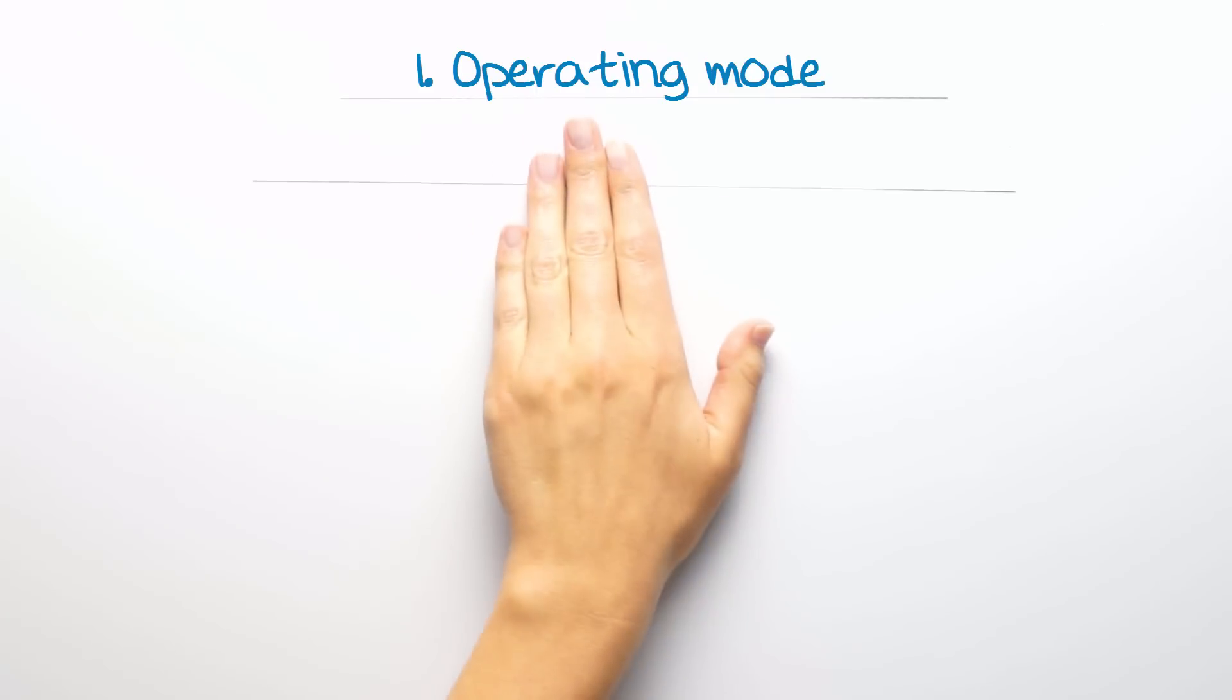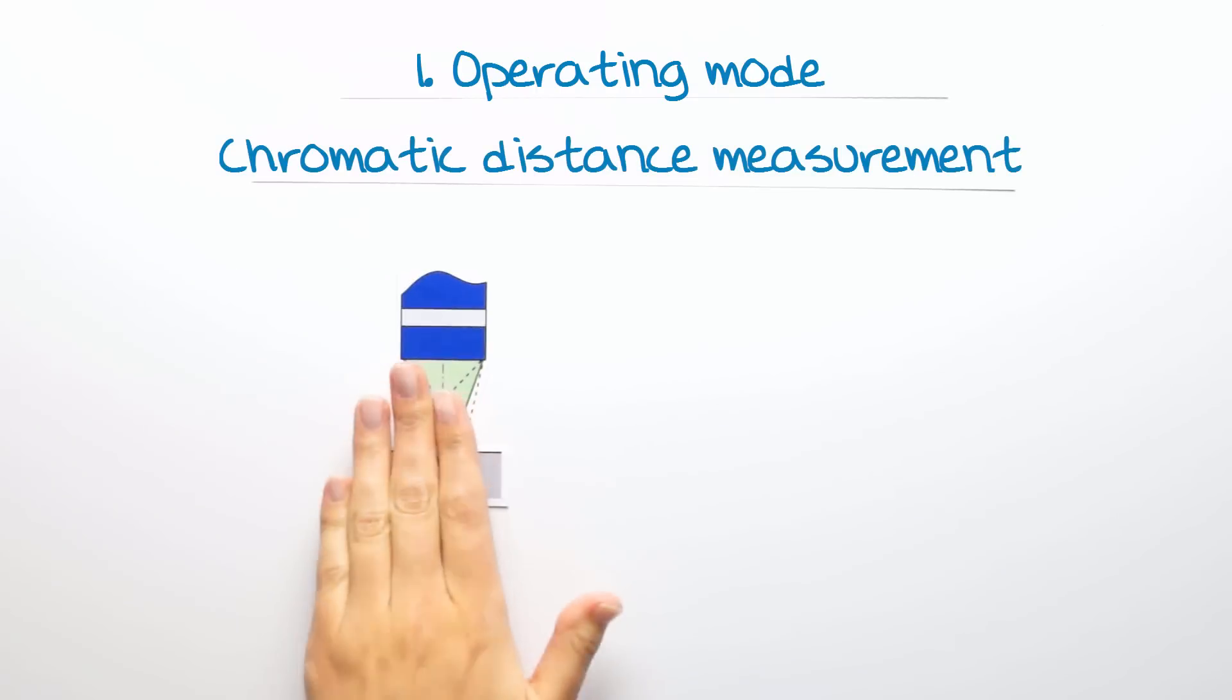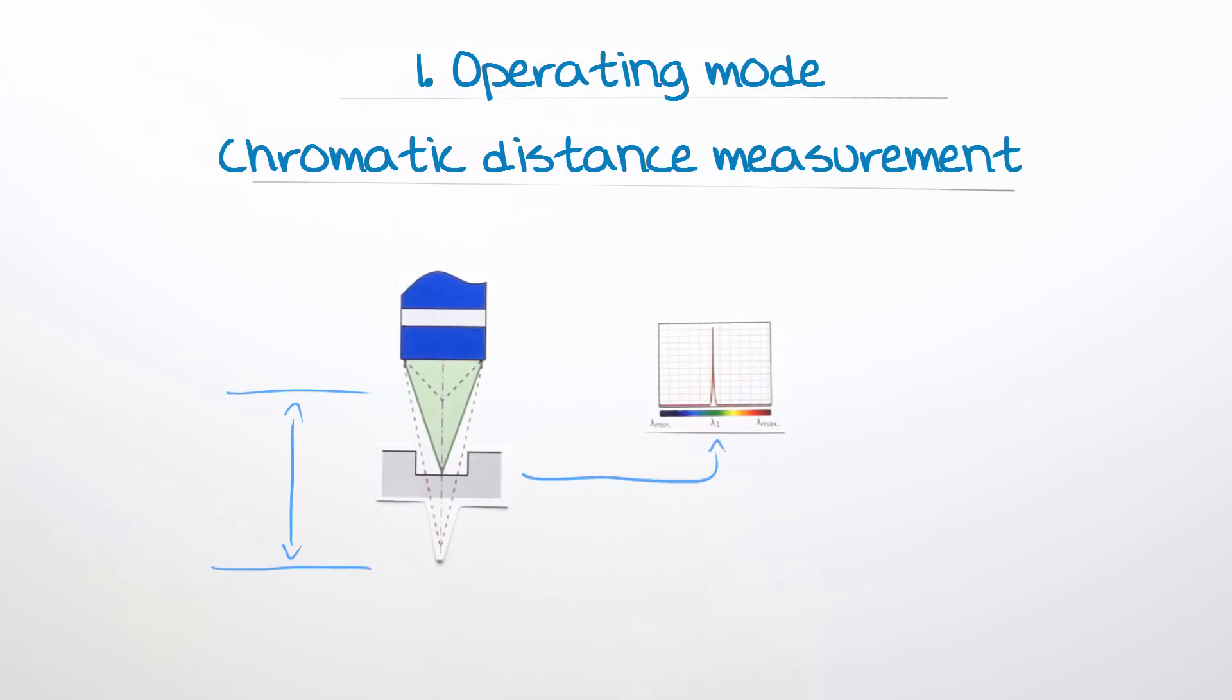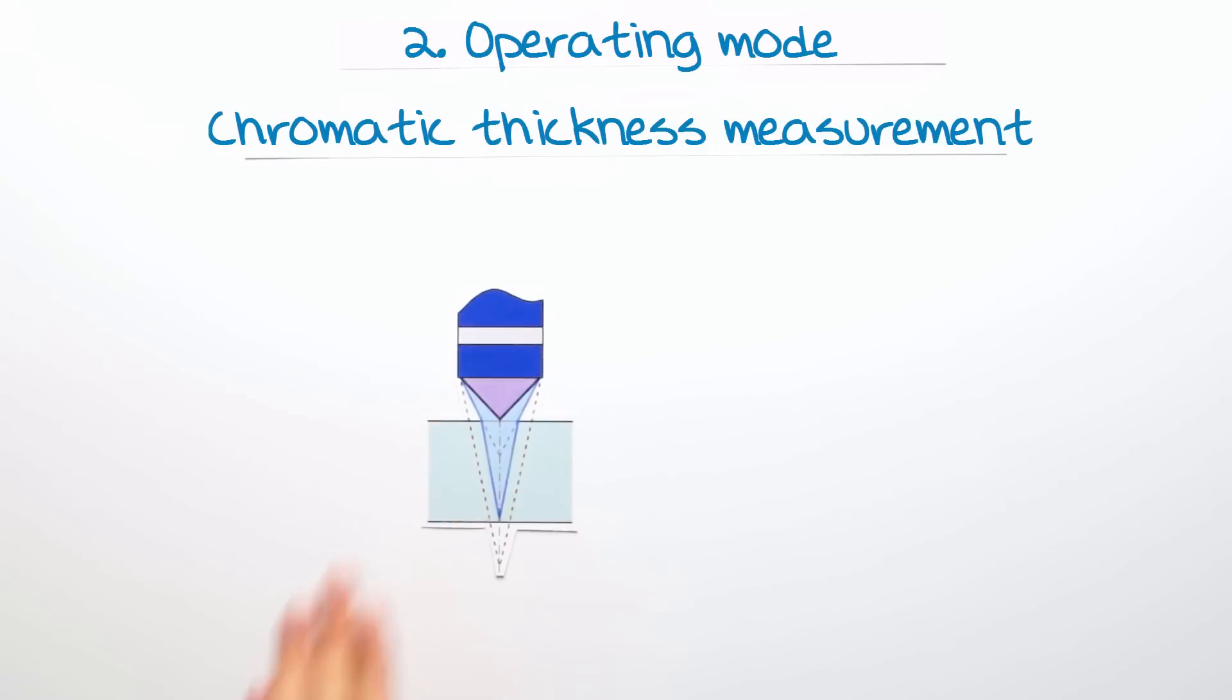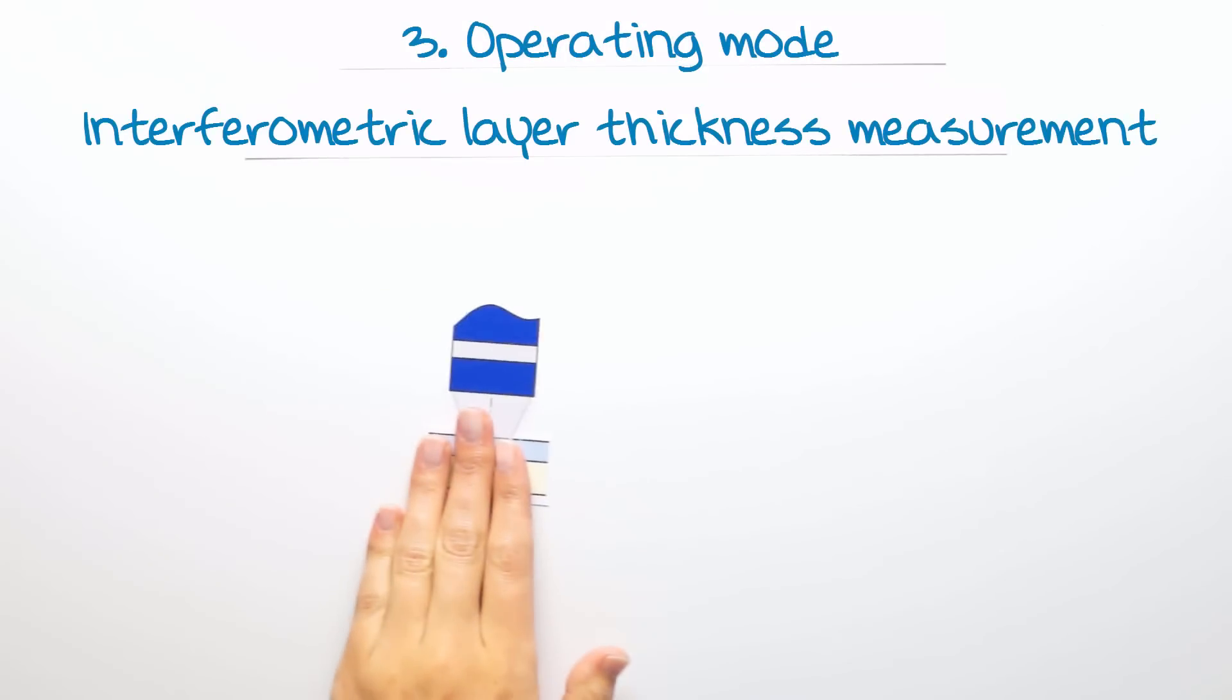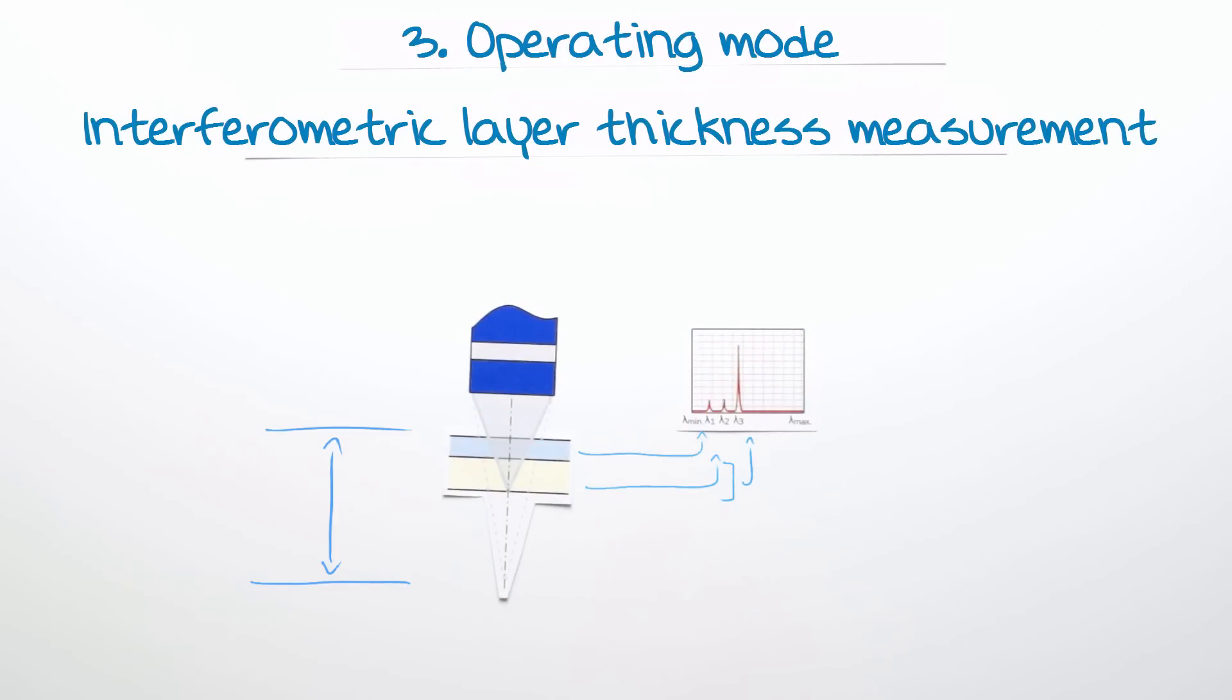The OC-Sharp short-range distance sensor has three operating modes. Mode 1: Chromatic distance measurement can be used for measuring topography, profile and roughness. Mode 2: Chromatic thickness measurement is used to measure the thickness of transparent objects. Mode 3: Interferometric layer thickness measurement is recommended for measuring multiple or ultra-thin layers.